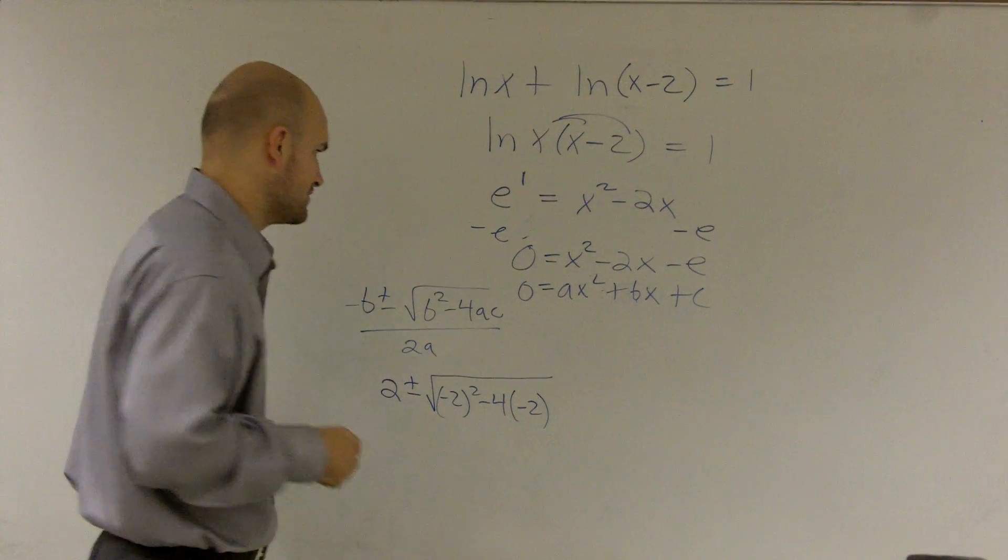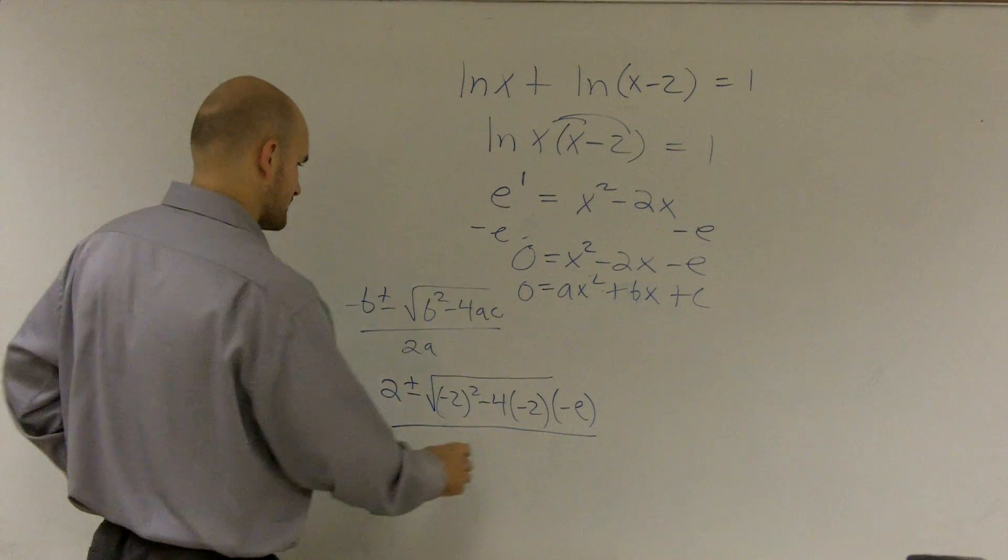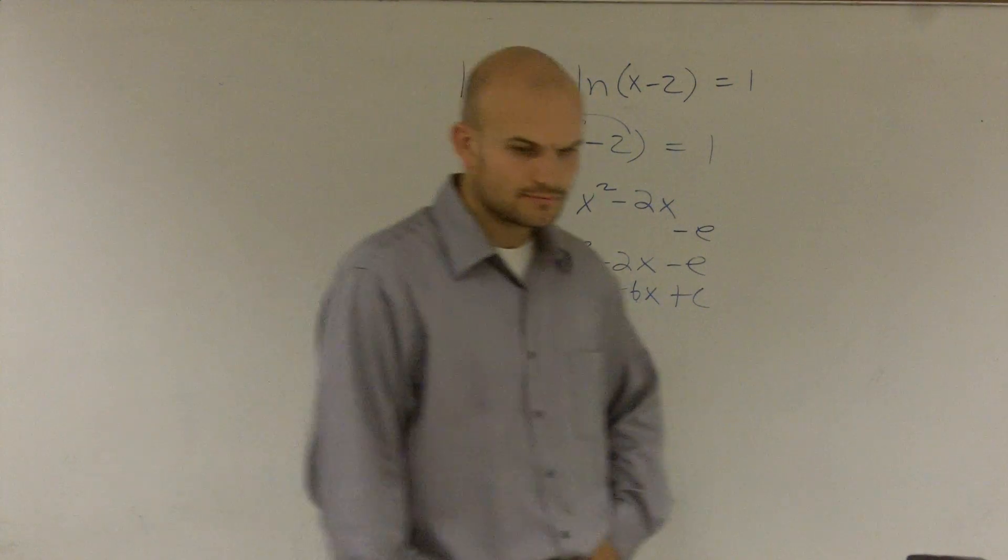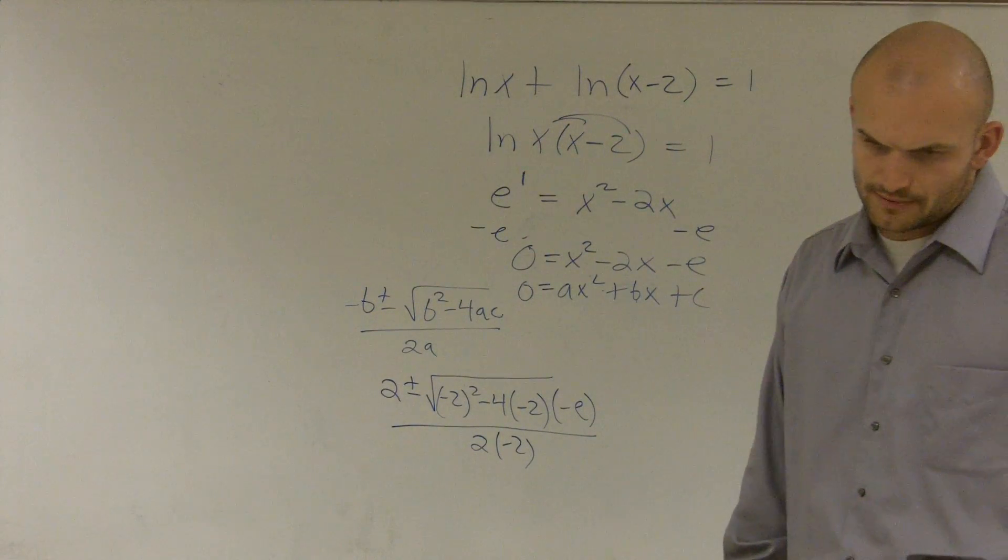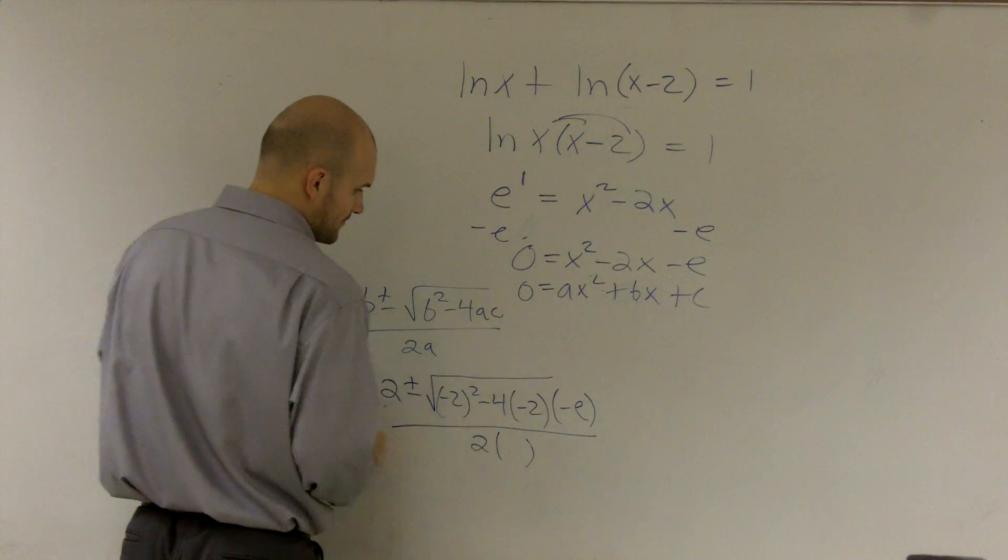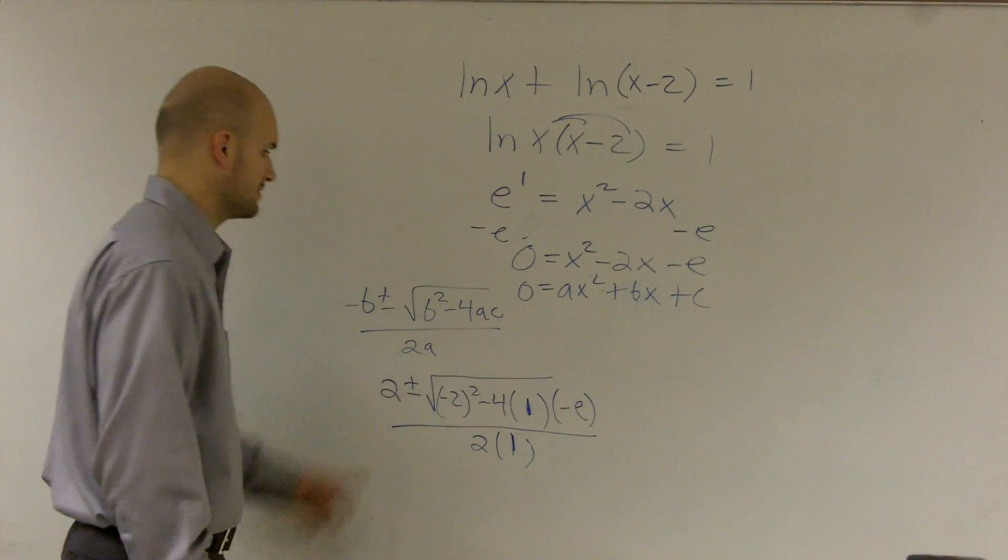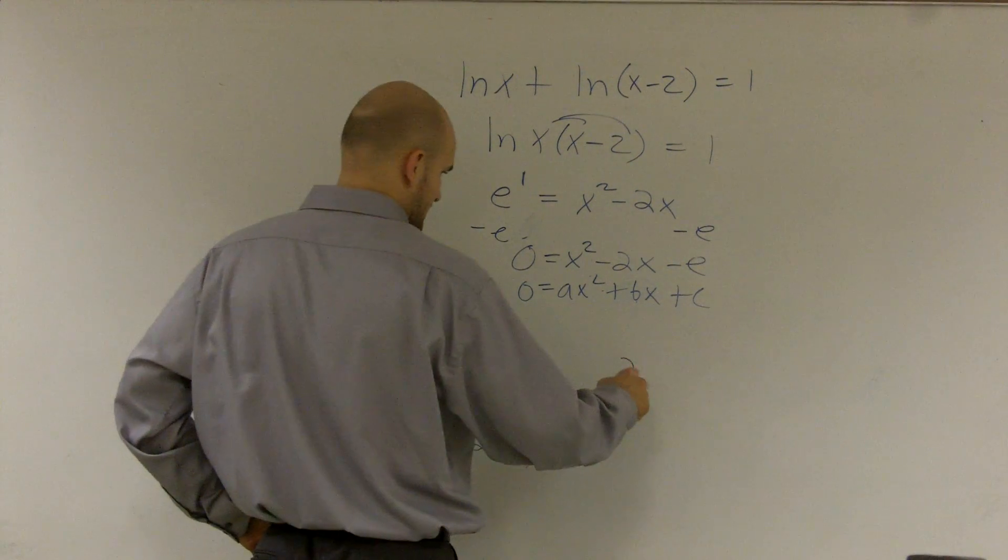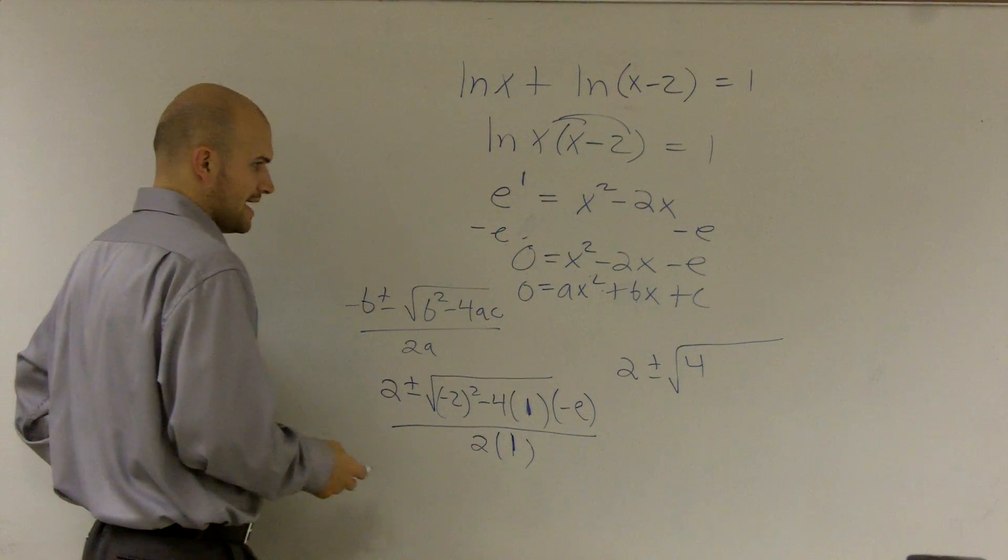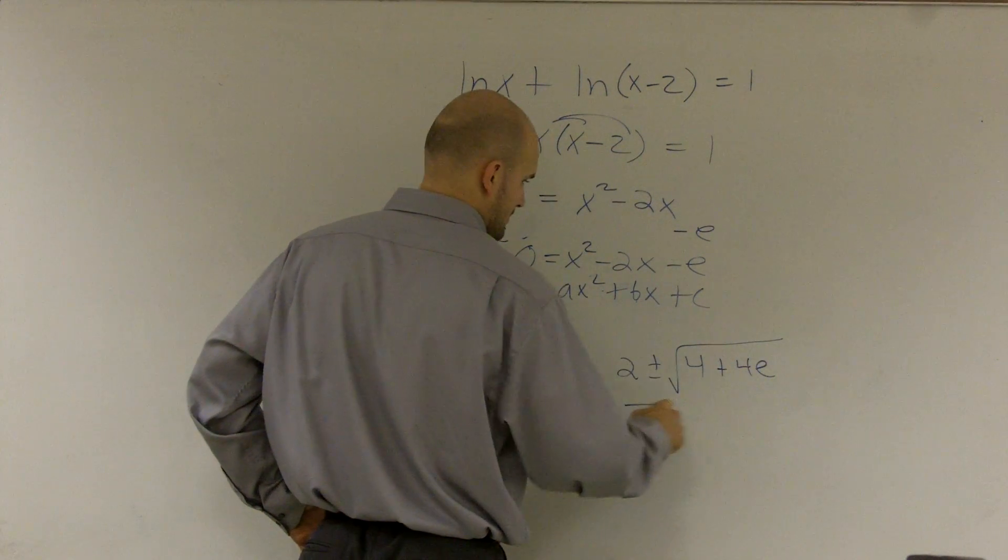So we have negative b plus or minus square root of b squared minus 4 times a times c all over 2 times a. So I get 2 plus or minus, negative 2 squared is 4, and that's going to give me plus 4e all over 2.